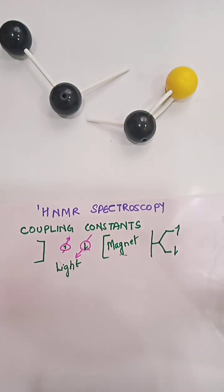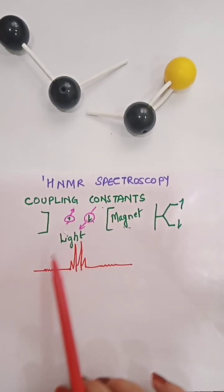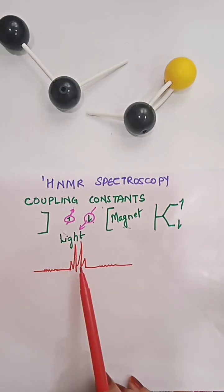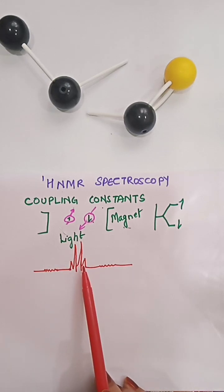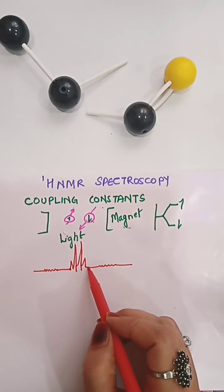So then what are coupling constants? We have usually seen this kind of graph. Now here the spacing between the lines in this NMR multiplet gives valuable information about the relative positions of the interacting nuclei.